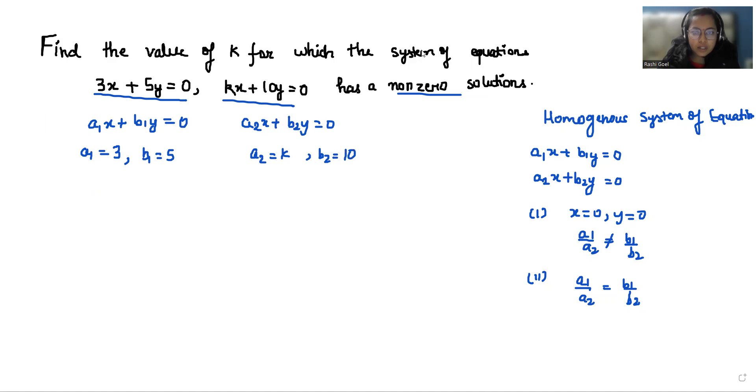So as we discussed already, this is the case of zero solution and this is the case of non-zero solution. We are taking the second one, that is a1 by a2 equals b1 by b2. So a1 is 3 by k equals 5 by 10.